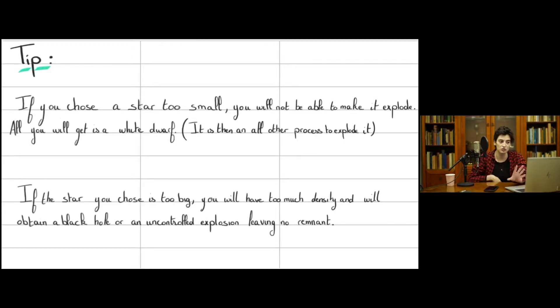If you choose a star too small, you will not manage to get an explosion. For example, our Sun will never explode into a supernova. It will just finish its life and more or less extinguish into a white dwarf. White dwarfs can explode, but way later, and it's an all other process. If you take a star that is way too big, you will have too much density, either fall directly into a black hole with no explosion, or you will have an explosion that you cannot control, and it will just end up disrupting the whole star. So you will not have a neutron star at the end or a white dwarf, just a cloud of gas staying there.